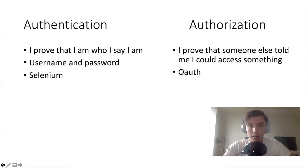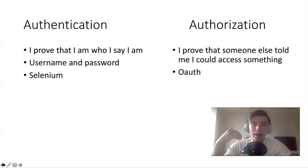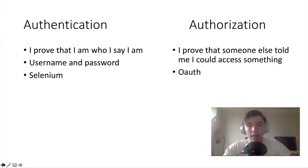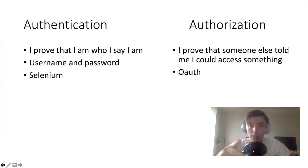The other option is authorization. The difference here is you're not proving that you are a specific user — you're saying 'here is proof that the user is giving me access to this data.' You're saying: I am not this person, I am a service, I'm an app. However, I know that this person — Jason — wants me to get access to this information. For that, we're going to use OAuth.